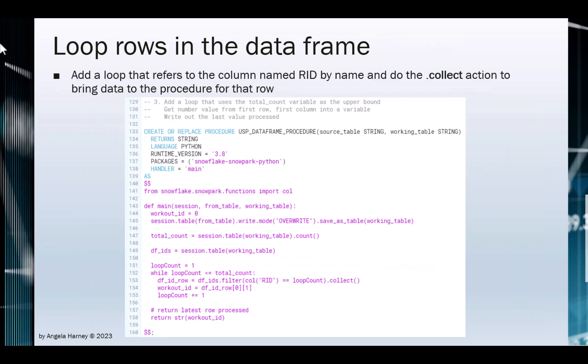Our table has a column named rid that stores an incremental row id, which we will use to loop each row, getting the id of each workout from the column named id.